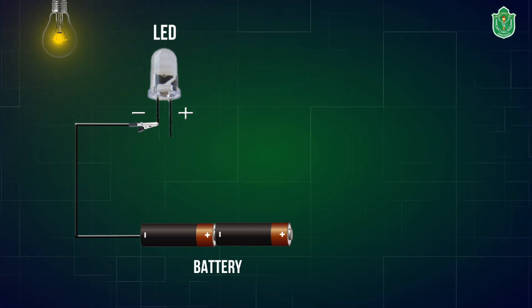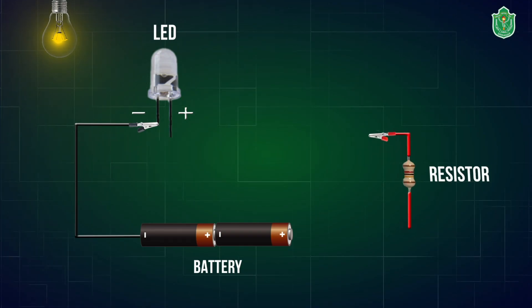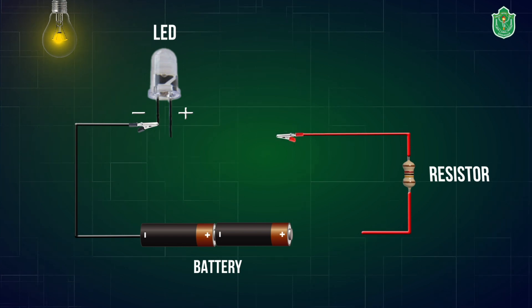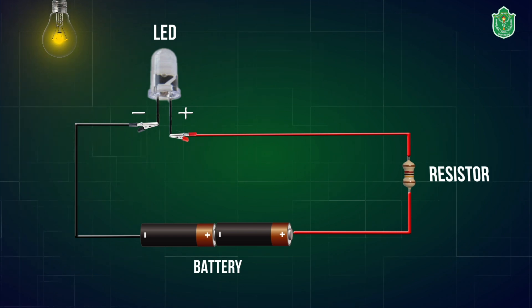As far as the second step is concerned, we are going to remove the insulation from both ends of the connecting wire and connect a resistor to the second wire in the middle of it. The two free ends of this wire are then connected to the positive terminal of the cell as well as to the positive terminal of the LED.